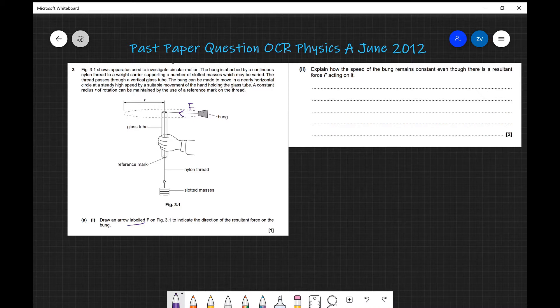As we said, centripetal force means center seeking force, so it will always be directed towards the center. So we need an arrow which is pointing towards the center, and additionally it says labeled, so we need to label that with F.